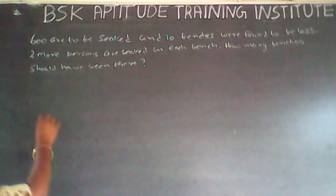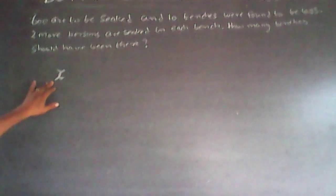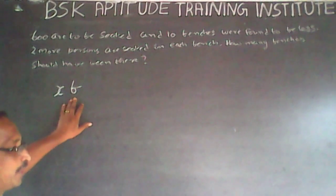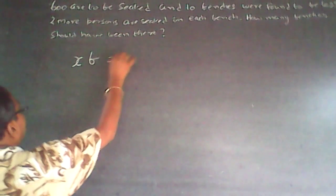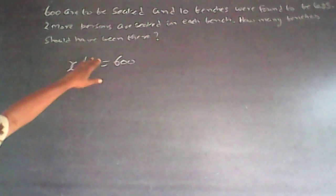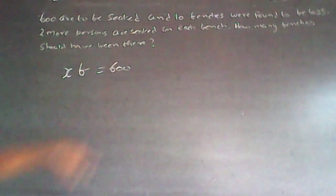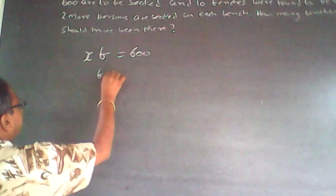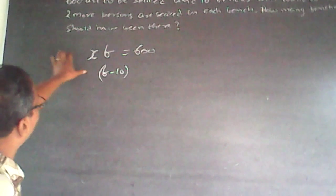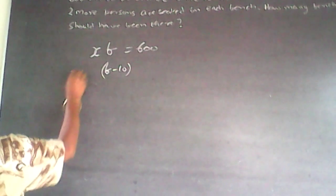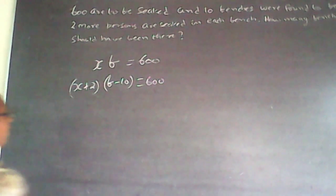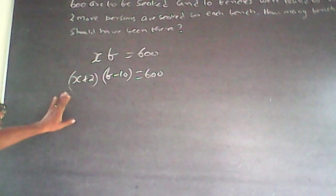Let x be the number of people to be seated in one bench, and let b be the number of benches that should have been there. So x times b equals 600. Because 10 benches are found to be short, the existing number of benches is b minus 10, and each bench had two more people, so that is x plus 2. The total number remains 600.